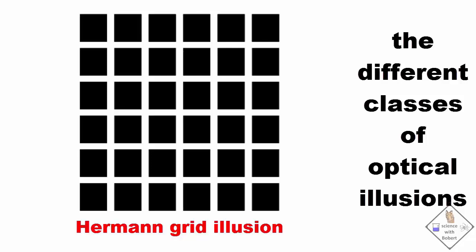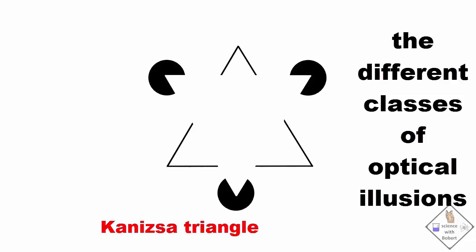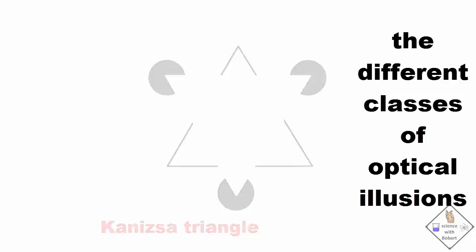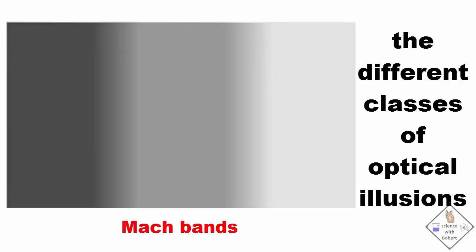This is a Kanizsa triangle. We perceive a white triangle where nothing is drawn. Do you see thin lines or bands along the gradient? If you do, they aren't actually there. They are called Mach bands.